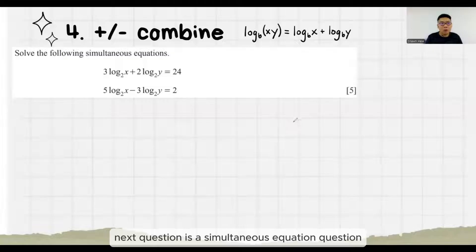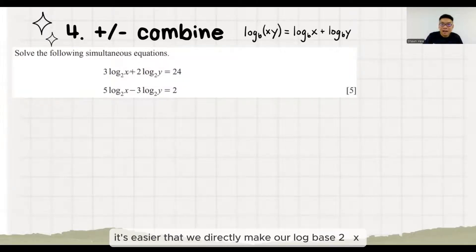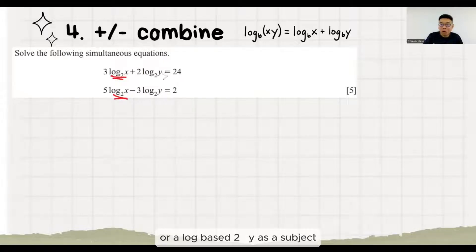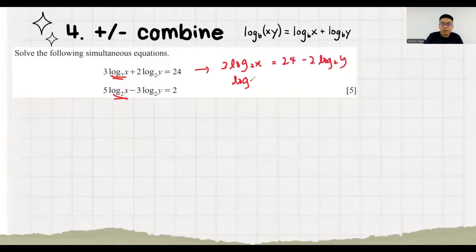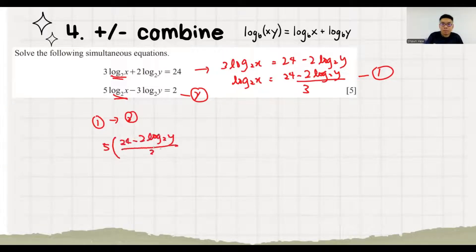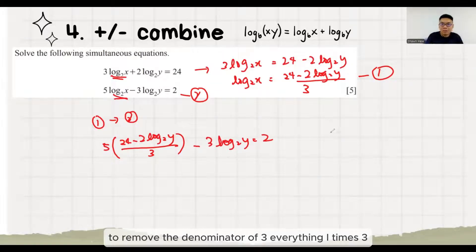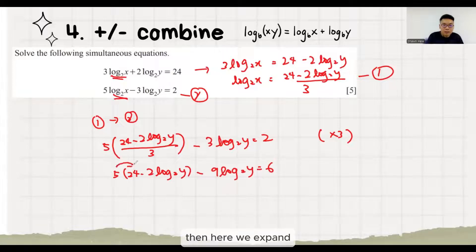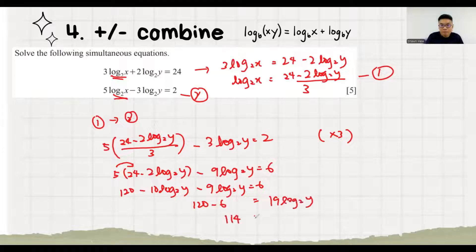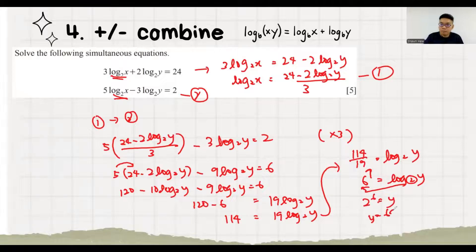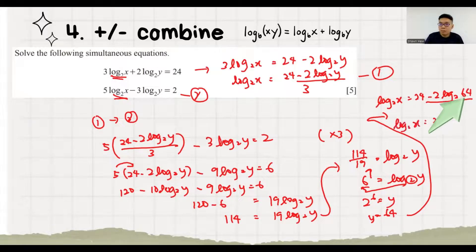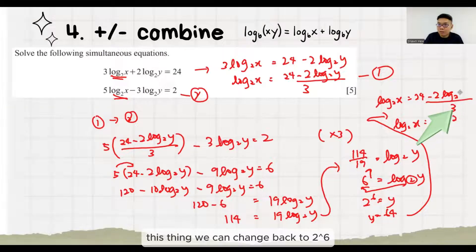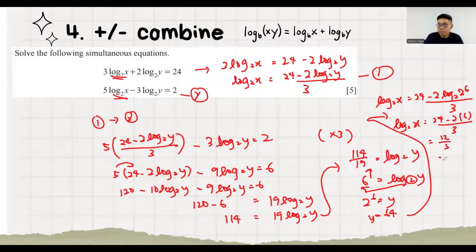Next question is a simultaneous equation. To solve this simultaneous equation, it's easier to directly make log base 2 of X or log base 2 of Y as a subject. I make log base 2 of X as a subject. Then I can substitute into equation number 2. To remove the denominator of 3, everything times 3. Then we expand. This thing we can change back to 2 to the power 6. Then we know this is minus 2 times 6. Log base 2 of X is 4. So X equals 2 to the power 4, which is 16.